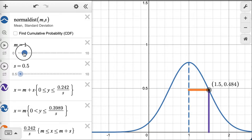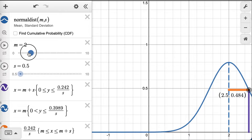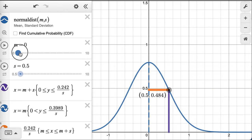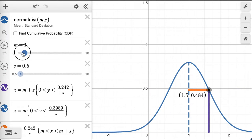Notice the mean doesn't change that. The mean now is 1. Now the mean is 2, 0.5. Here the mean is 1.5. Here the mean is 0, 1, 2. I can change the mean and the whole thing moves over.